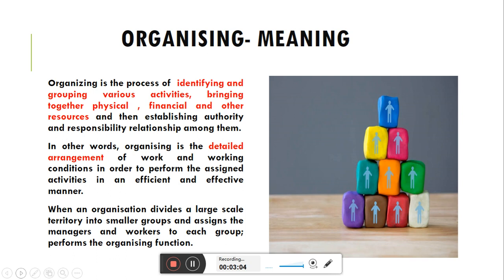जैसे for an example: एक company है — construction company। उस company का objective क्या है कि हमने एक particular building को एक महीने के अंदर-अंदर ready करना है। तो जो manager है उसका objective set हो गया, aim set हो गया कि हमने एक महीने के अंदर-अंदर ये particular building को set up करना है। उसका next function होगा — organizing।